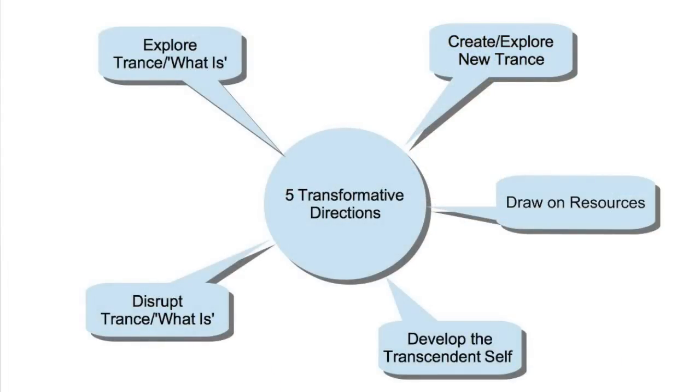There are essentially five directions we can go in. These are in no specific order — just the order they come to mind. The first is exploring what is: exploring current, existing trances. When we're doing change work with people, 'what is' is usually the thing they want to change — some kind of toxic trance, some set of behavioral or experiential reactions in a particular context that someone feels is not supporting how they really want to be in the world.